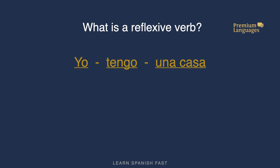Before that, let's see an example of a simple sentence using a non-reflexive verb. For instance, 'yo tengo una casa' — I have a house. If we break it down, we can see three parts: the subject 'yo', then 'tengo' is the verb — an action — and then 'una casa', a house, which in grammar is considered a direct object.